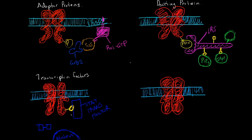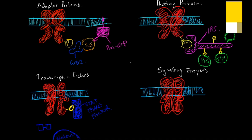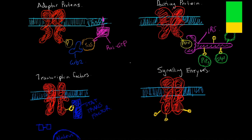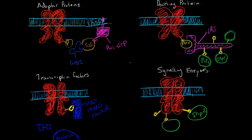STAT proteins are really involved in immune responses — they're important for any type of immune response, and they're also very important in cancer research and immunotherapy research. Last but not least, we have signaling enzymes. Phospholipase C is my example here. Following binding they might activate molecules like SHIP2 and PI3K.